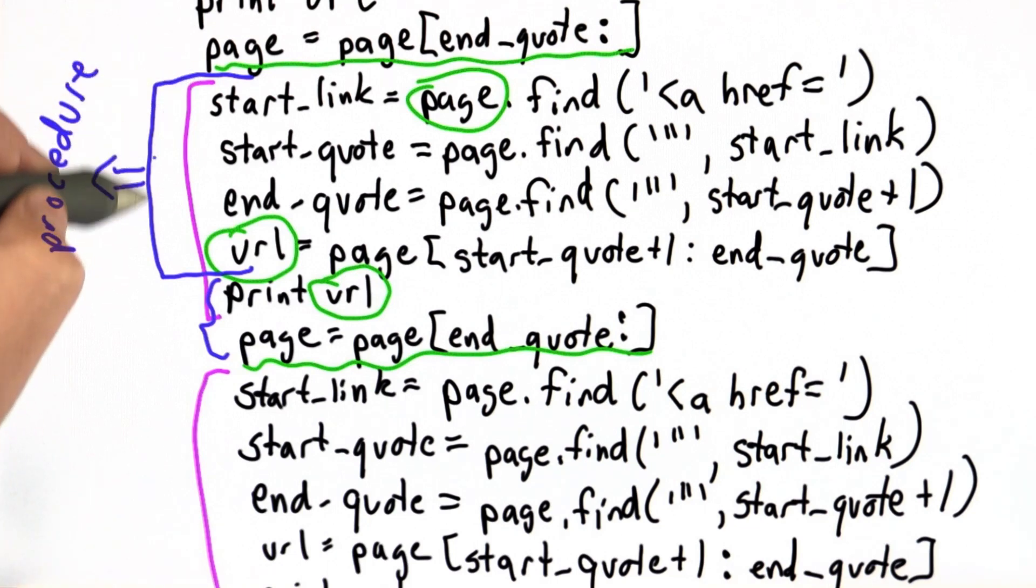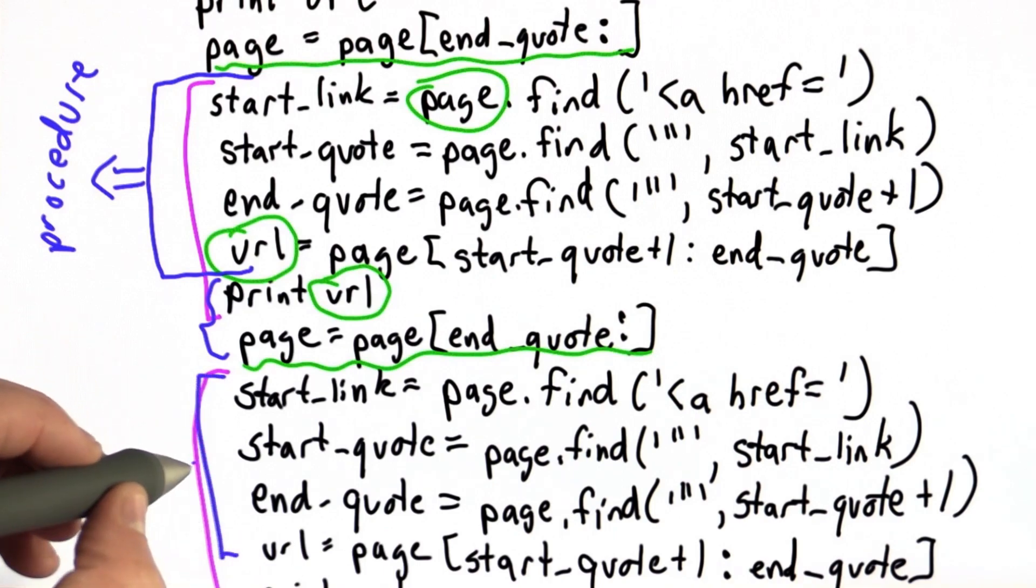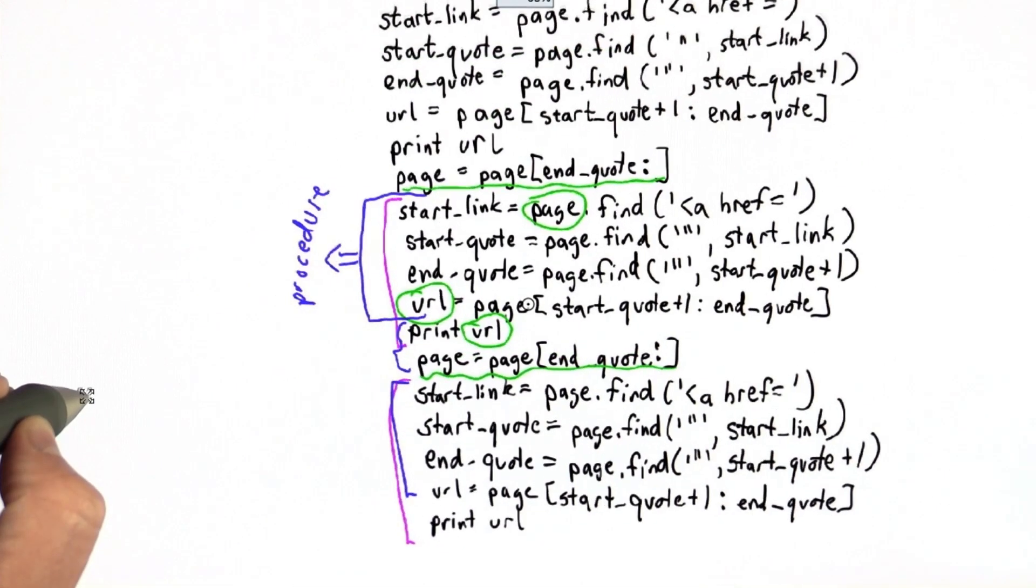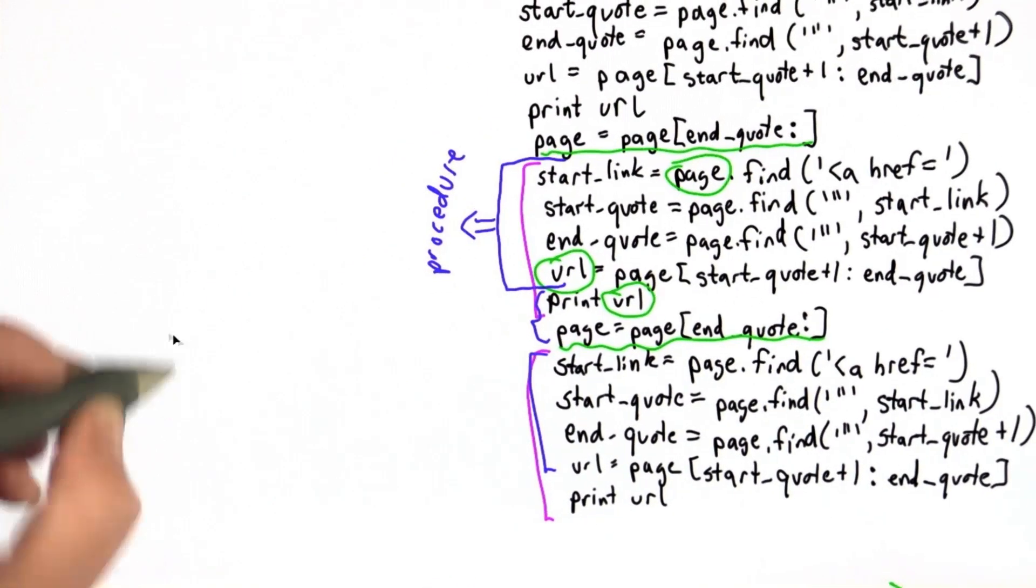Our goal is to figure out how to turn this part of the code into a procedure so we could keep reusing it each time instead of writing the same code. Let's start with a quiz.